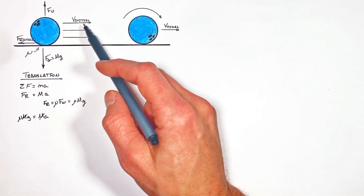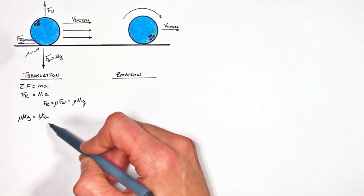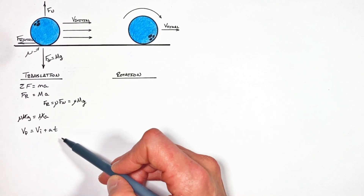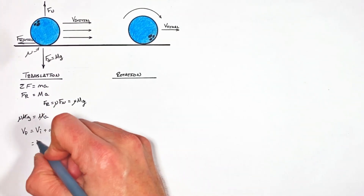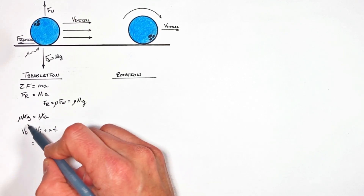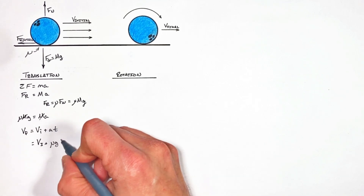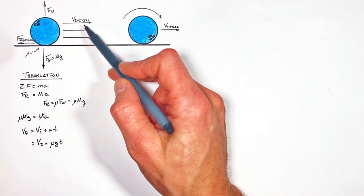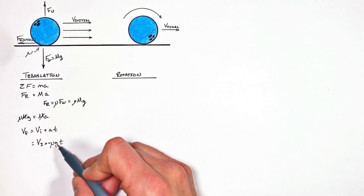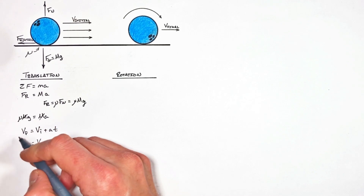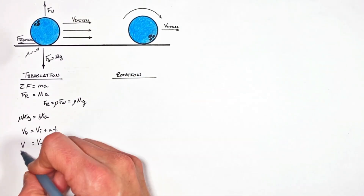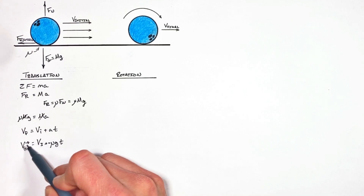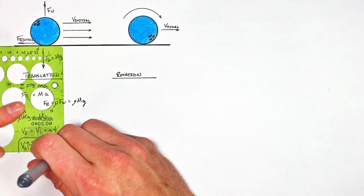This ball starts at some initial velocity Vi and accelerates due to friction. Going back to the kinematic equations, the velocity of the ball at any given point in time is given by V = Vi + At. The initial velocity is Vi, and the acceleration term gives us μG times T. Since friction produces a negative acceleration when the ball moves to the right, we get V(t) = Vi − μgT — the translational velocity of the ball as a function of time.